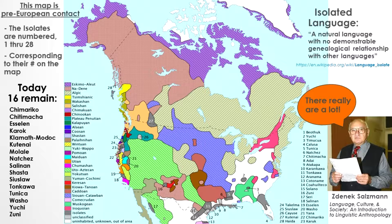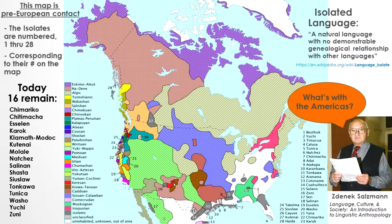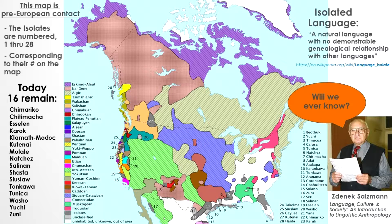He goes on to say that the Americas have been more linguistically diversified than other continents. At the time, in 1993, Salzman estimated the number of total languages at about 6,000, saying it is impossible to even guess at how many languages must have become extinct in prehistoric times. He goes on to number the Native American language families in North America at more than 70, and more than 30 separate isolated languages.